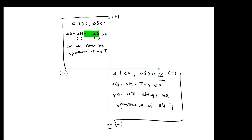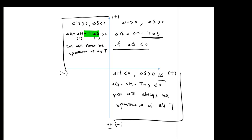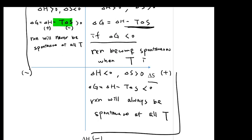Things get more interesting in the other two quadrants. When ΔH is positive and ΔS is also positive, ΔG = ΔH - TΔS. To make ΔG negative, the second term needs to outweigh the first term. This happens when temperature is high — at high temperature, the TΔS term becomes dominant, making ΔG negative.